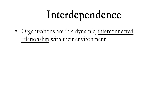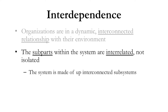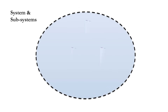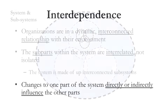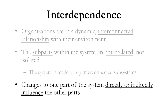Interdependence is another leading concept in the systems approach, where organizations are in a dynamic and interconnected relationship with their environment. There are sub-parts within the system that are also interrelated — not isolated. The organization is connected to its community, and the pieces within the organization are also interconnected, made up of interconnected sub-systems. So you have a whole organization, then major departments within it, and within those departments work teams that are also interrelated and overlapping. Changes to one part of the system directly or indirectly influence other parts — for example, if people call in sick on one team, others will be affected and may have to pick up that work.